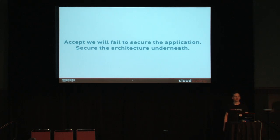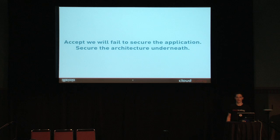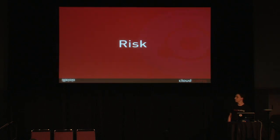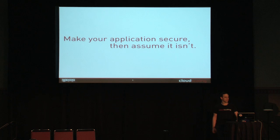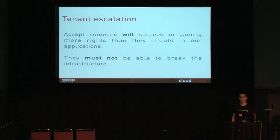We want to accept that we will fail to secure our applications, and we have to secure the architecture underneath. There's a lot of things we can do to improve the security of OpenStack itself, but as best we can, we have to assume that we will fail to do that. Tenant escalation: we accept that someone will succeed in gaining more rights than they should in our applications. They must not be able to break the infrastructure.